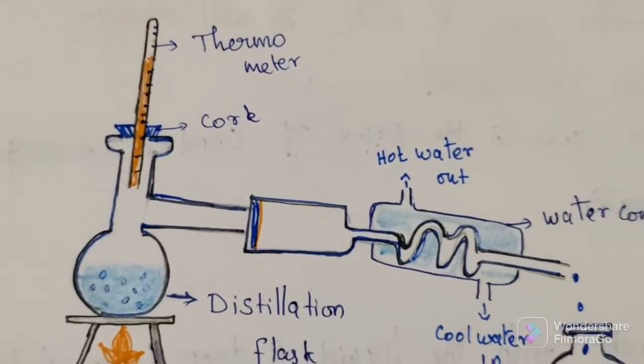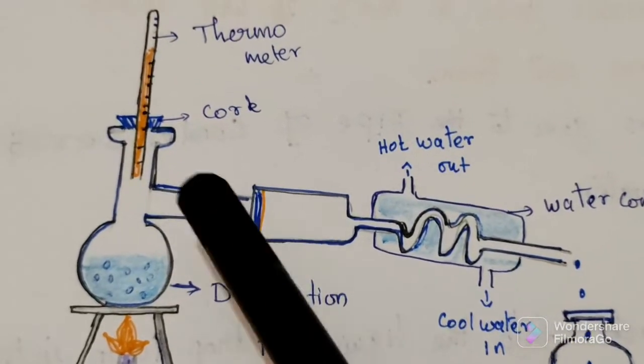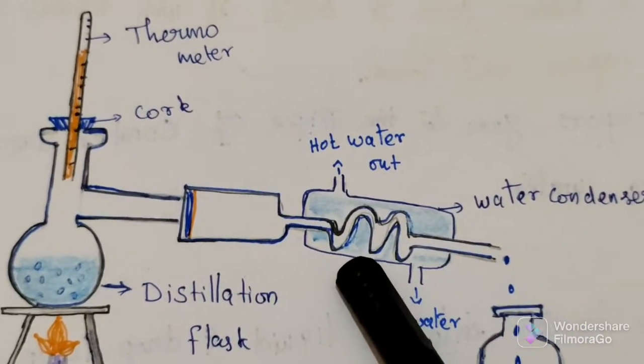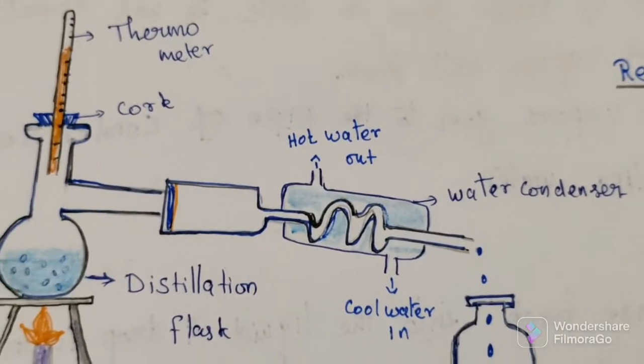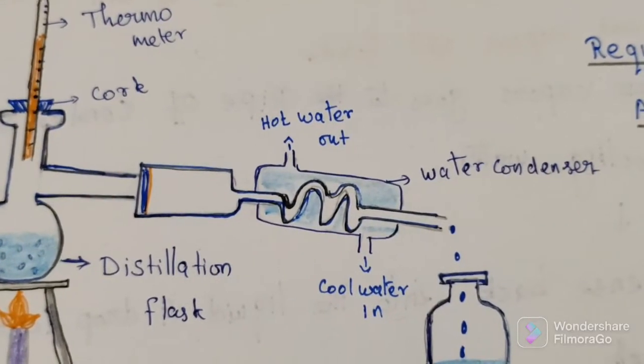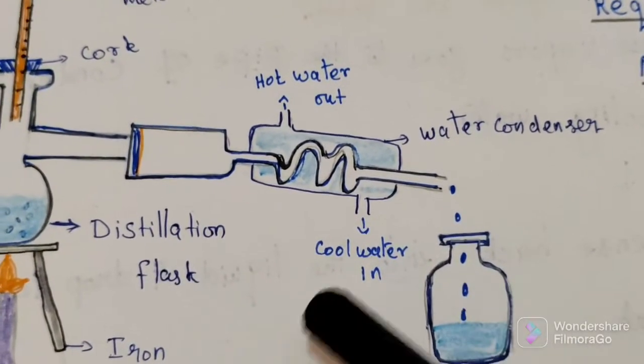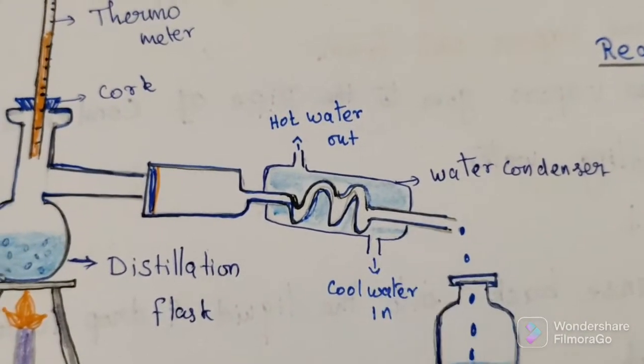Set the condenser with the side opening of the distillation flask. Here at the side arm, we will set this water condenser. For exchange of heat, cooling tap water is used here.